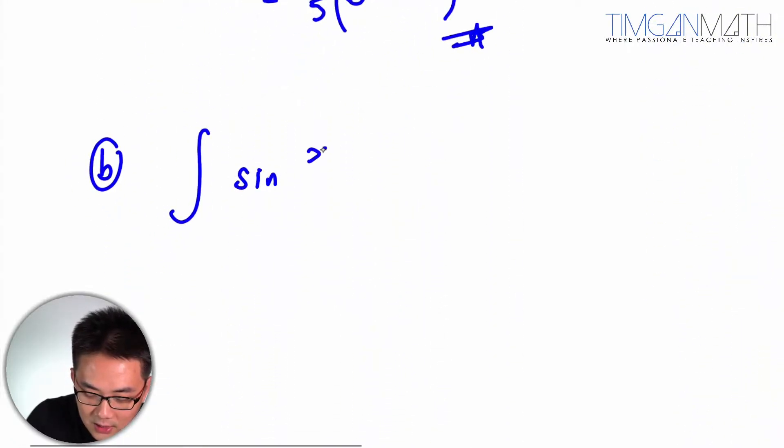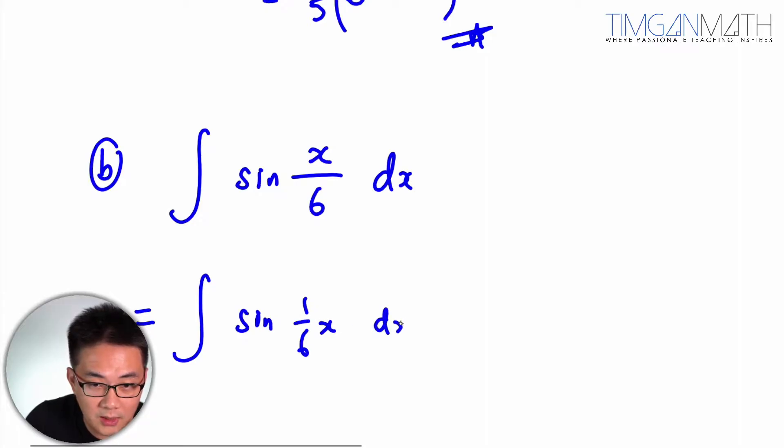So, sine x over 6 dx. Now, one thing you need to take note is actually just extract the coefficient of x out, which is 1/6 x. Alright, this part here is important.